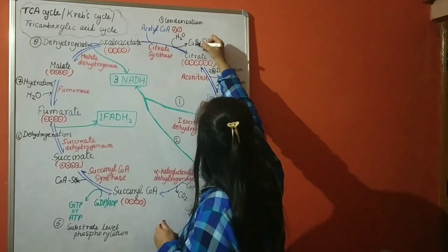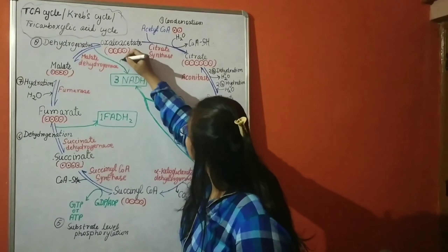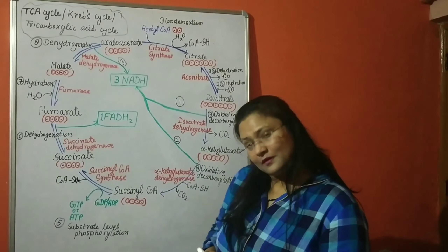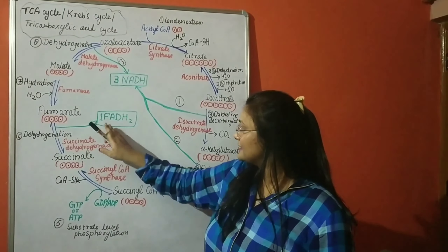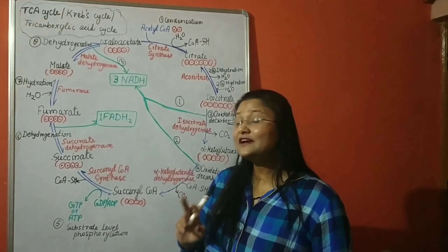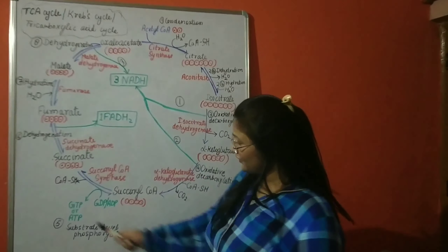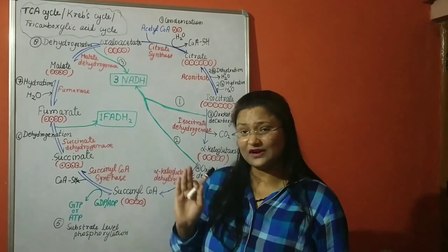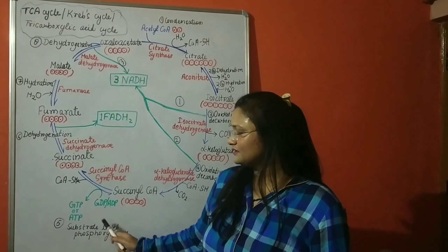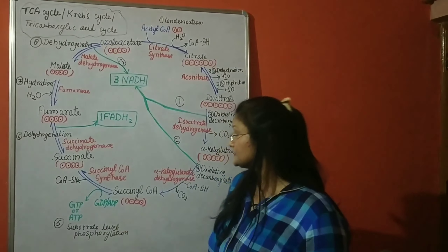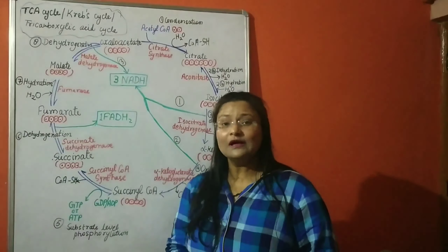Summarizing the energy molecules produced: overall from one turn of the TCA cycle, we get 3 NADH, 1 FADH2 (which has energy equivalent to 1.5 ATP molecules), and 1 GTP or ATP. This cycle was first observed in pigeons, where GTP is formed, but in humans ATP is formed, so both are written.